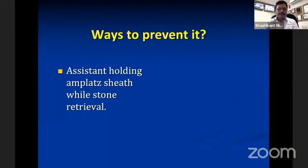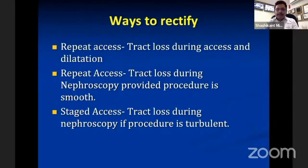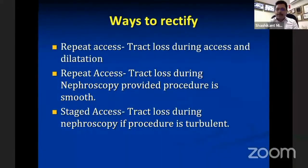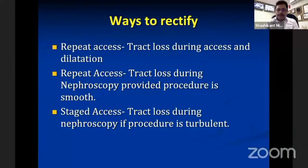Rectifying track loss is not a big issue if you are confident. If track loss occurs during initial dilatation or access, you can repeat the access. Repeat access can also be done when track loss happens during nephroscopy, provided the procedure was going smoothly and without significant bleeding. However, if the system was turbulent with bleeding and you face track loss, a staged access is better — it is always better to live and fight another day rather than subject yourself to an unwanted territory.